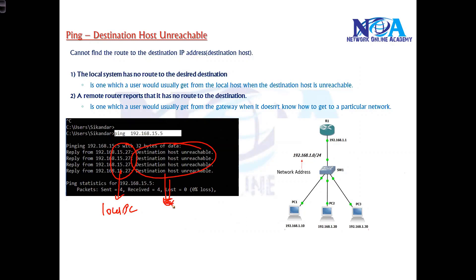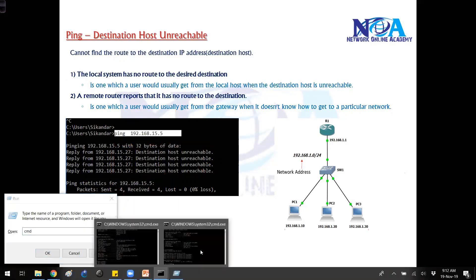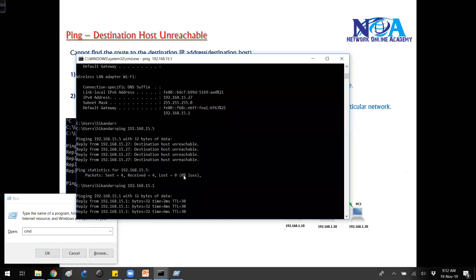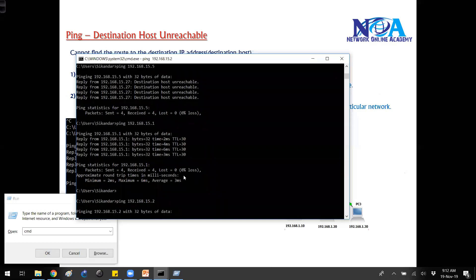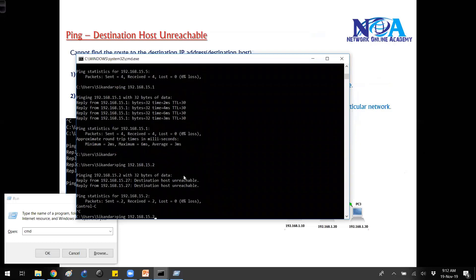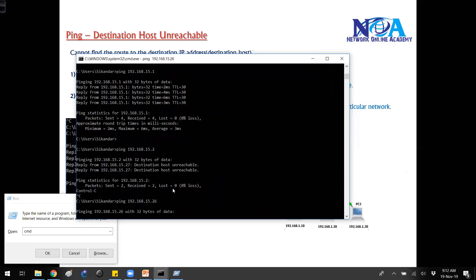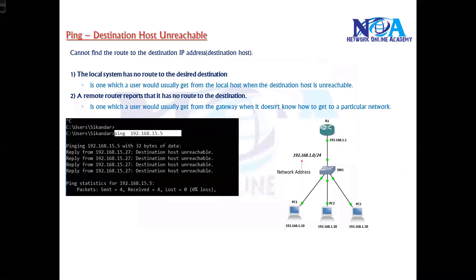If the reply is coming from your local PC, the local system has no route to the desired destination — meaning the host the user is trying to reach from this local host is unreachable. Maybe that host doesn't exist. For example, if I ping 15.1 I can reach it because that device is present, but it doesn't know about 15.2. One possible reason is the host does not have a route and doesn't know how to reach that particular destination.